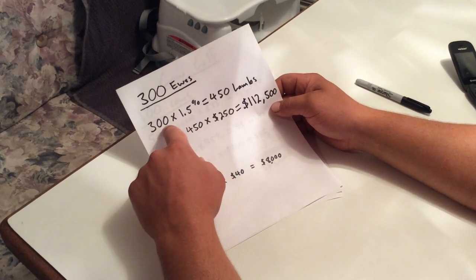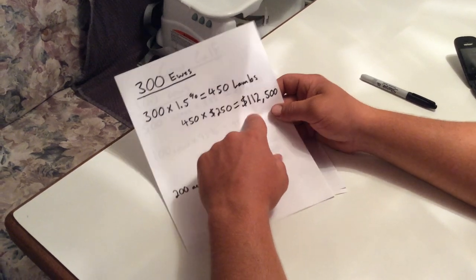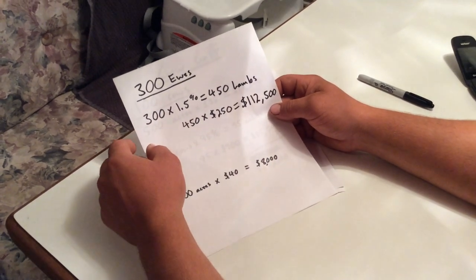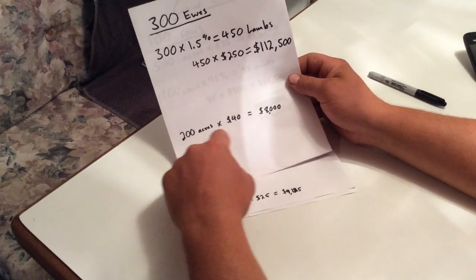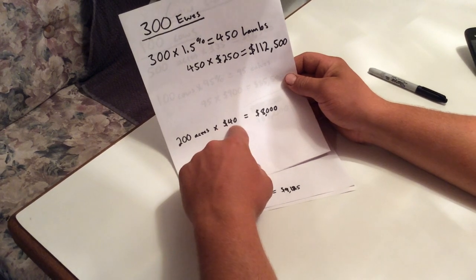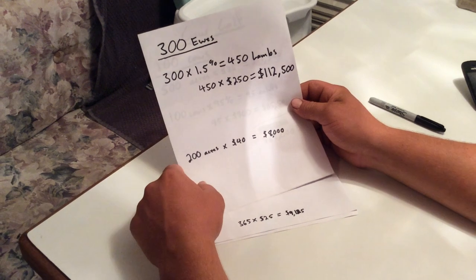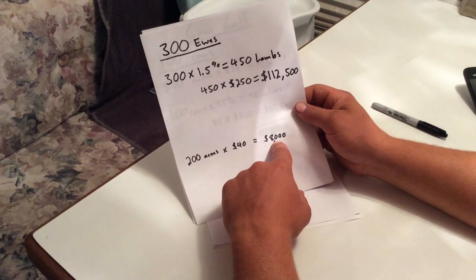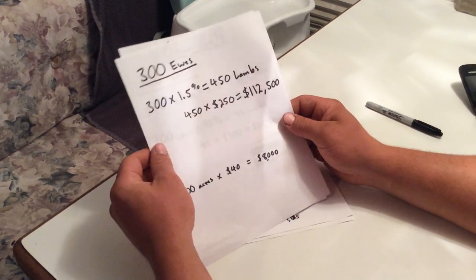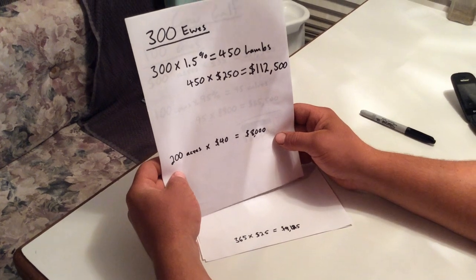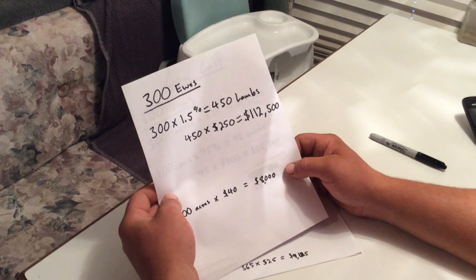A one and a half percent, which I know we can do better than that, but we'd get 450 lambs at $250 each. That's over $100,000, $112,500. And we're talking about 200 acres of land and I put $40 an acre on here. That would be pretty high, but land's hard to get so we might pay that. That's only $8,000 in rent. But, I mean we're still over $100,000 to do the rest of the stuff with. Which, with our system, is pretty much nothing.